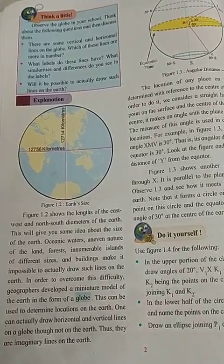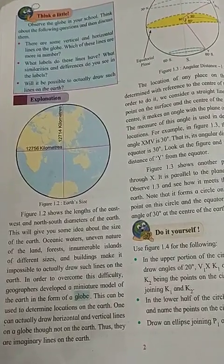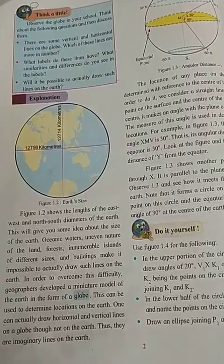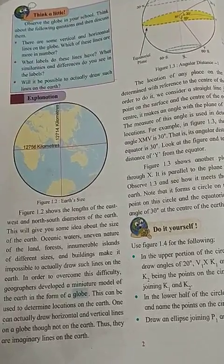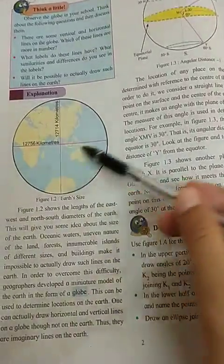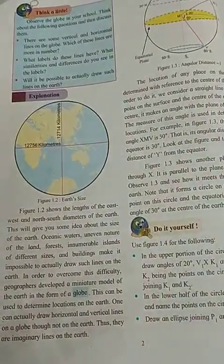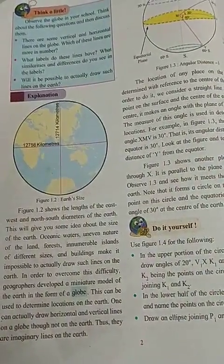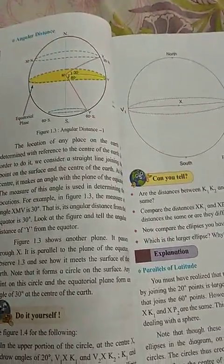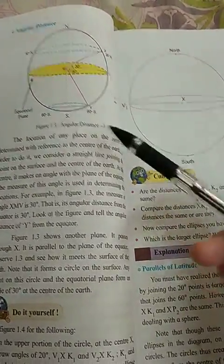This globe can be used to determine locations on the earth. One can actually draw horizontal and vertical lines on a globe, though not on the earth itself. Thus they are imaginary lines on the earth — that means horizontal and vertical lines which can be drawn on the globe. See — angular distance.